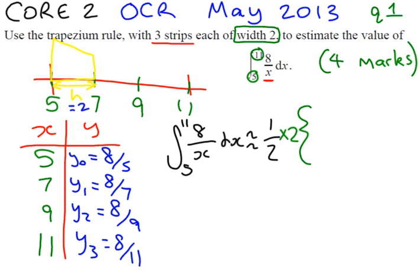Times by y0 plus y3. That's the first and the last one. Then add on two lots of the middle y values, which in this case is 8 over 7 plus 8 over 9.